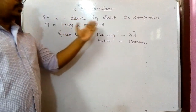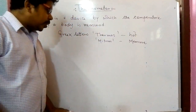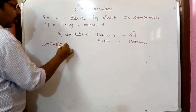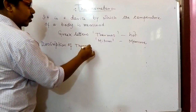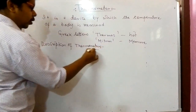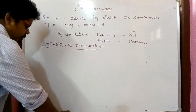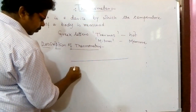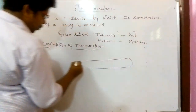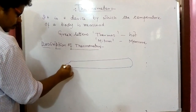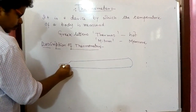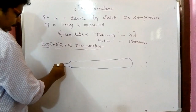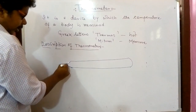Now we are coming to the next part — that is the description of thermometer. Description means how it looks and how it works. It is a glass tube, fully made of glass, and inside this portion the mercury is stored.